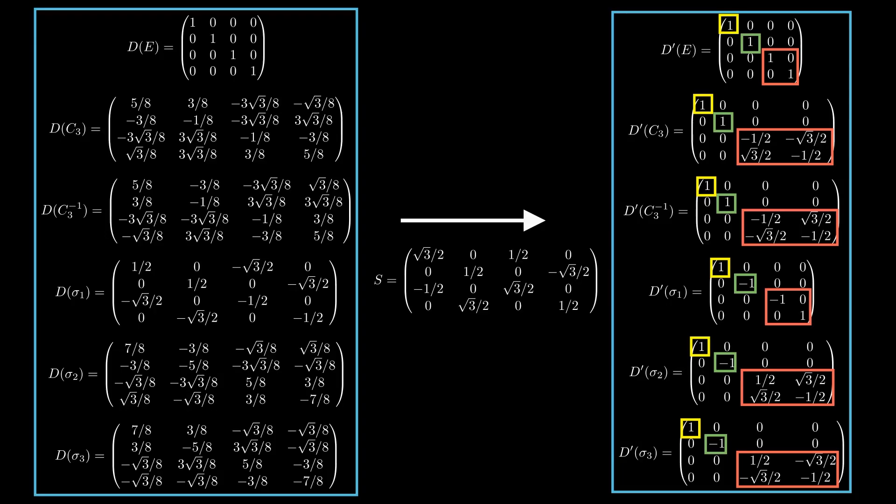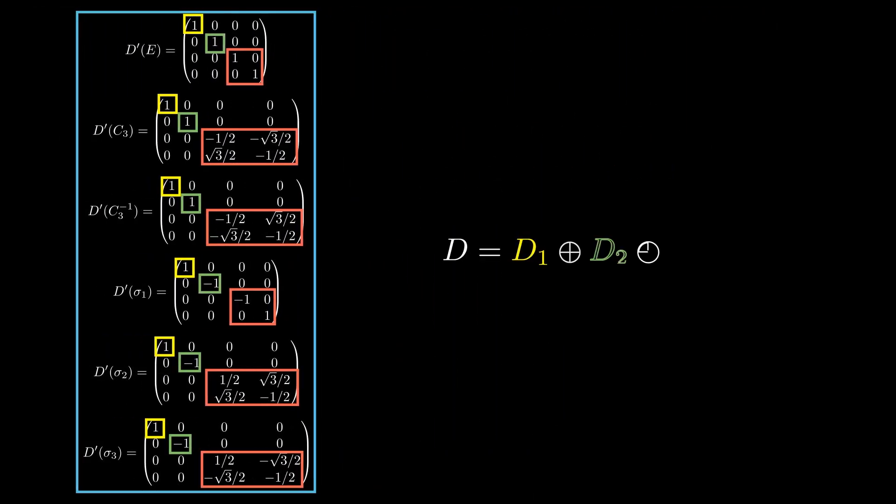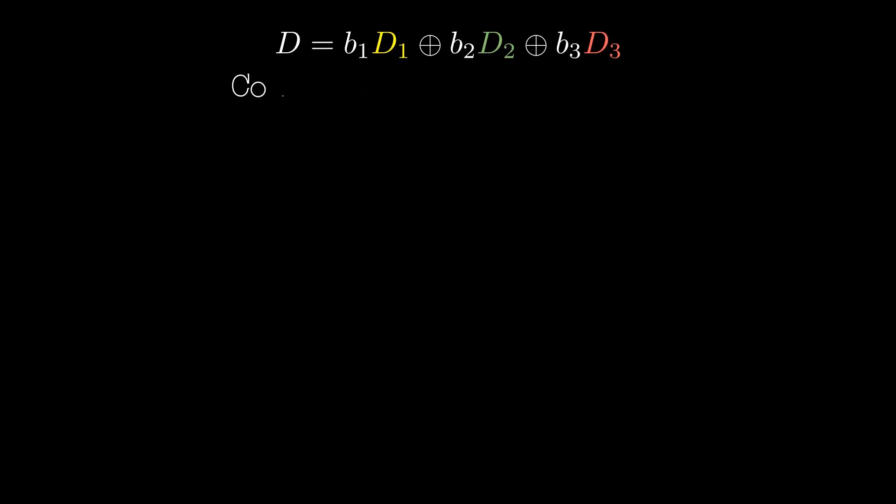To make our lives easier, we can write compactly this decomposition using the direct sum notation. In general, an irreducible representation can appear more than one time in the decomposition. Now that we know how to decompose any representation, let's formulate a consequence of a lemma called Schor's lemma.